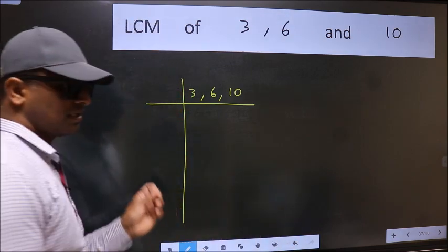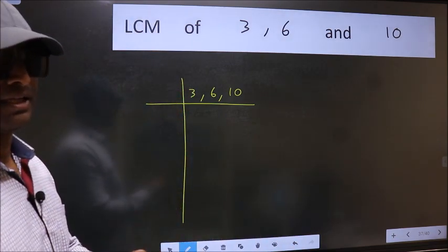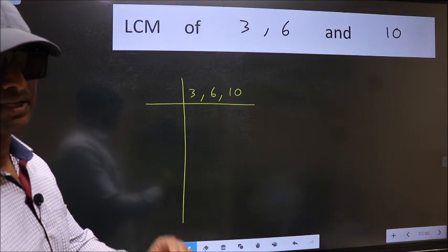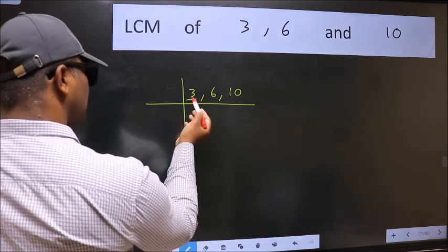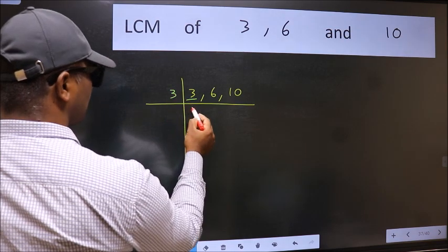This is your step 1. Now we should focus on the first number which is 3 here. 3 is a prime number, so 3 wants 3.